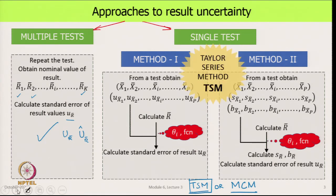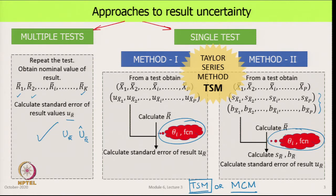Within the Taylor Series Method we have two methods. We will look at method 1, develop the analysis, and after that a small modification to that will give us the required information for method 2, completing our mathematical treatment. In both cases, our common objective is a function which links measurement uncertainties and mean values of the measurements and result to uncertainty in the result.